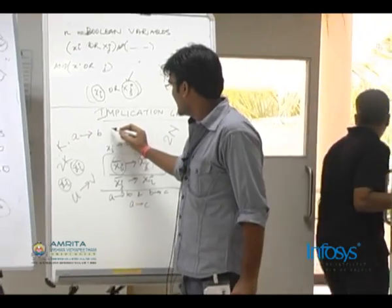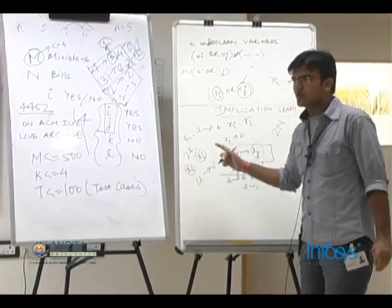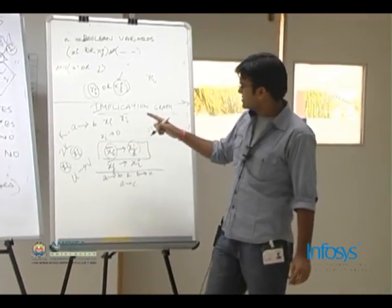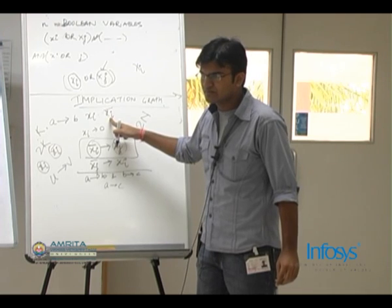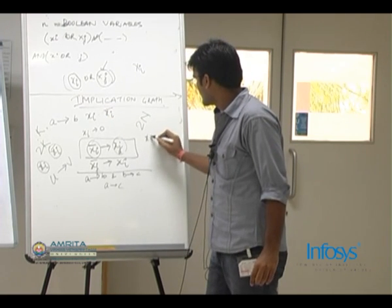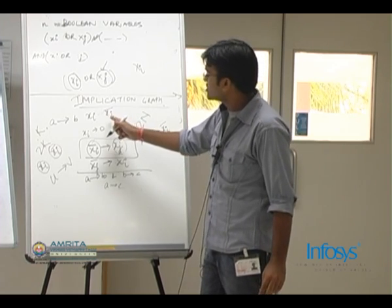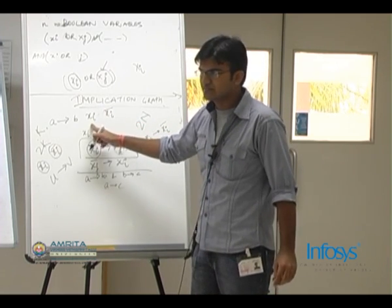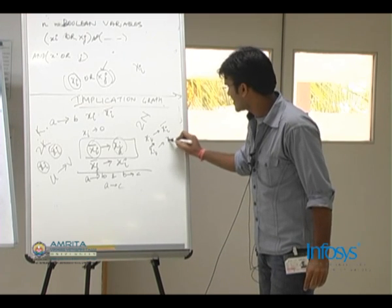If XI and XI complement they both are in the same strongly connected component, that would mean that there will be a path from XI to XI complement which means XI implies XI complement, and there would also be a path from XI complement to XI which would mean XI complement implies XI.